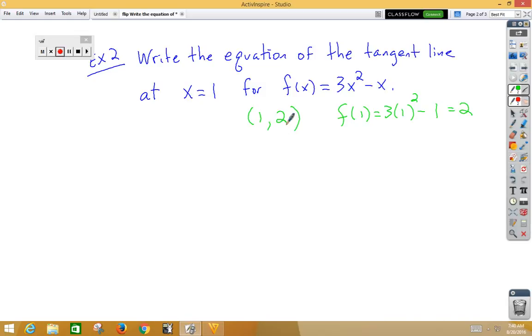To get our slope, we would do the derivative of our function. That would be 6x minus 1. And it's at the value x equals 1. So f prime of 1 is equal to 6 times 1 minus 1, giving us a slope of 5.